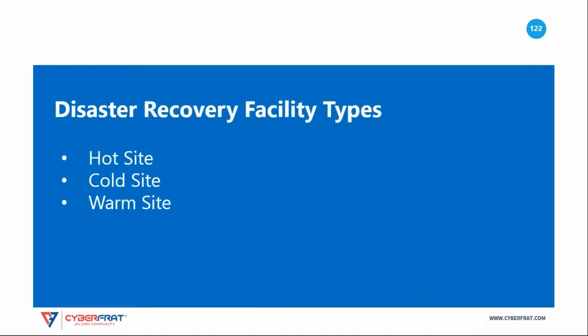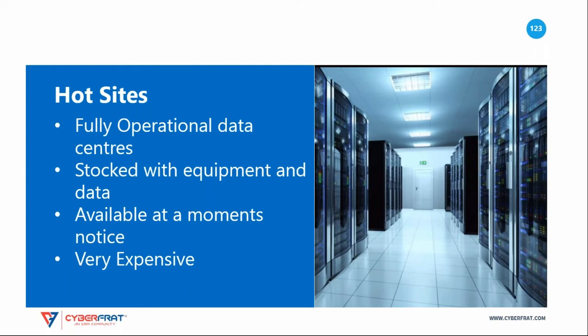There are three main types of alternate processing facility: hot site, cold site, and warm site. Hot sites are the premier form of disaster recovery facility. They are fully operational data centers that have all the equipment and data required to handle operations, ready to run. Technology staff can activate a hot site at a moment's notice, and in many cases the hot site will actually activate itself if the primary site fails. This provides an unparalleled level of redundancy, but it also comes at great price — the cost of building and maintaining a hot site is typically similar to running the primary data center, essentially doubling your cost.